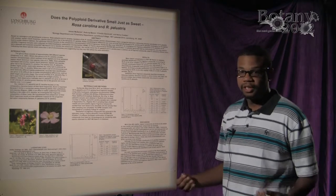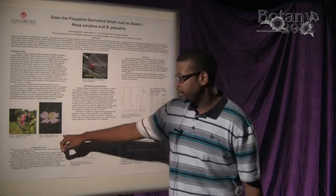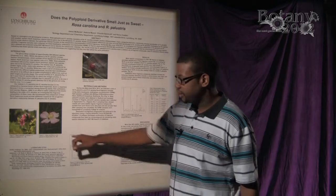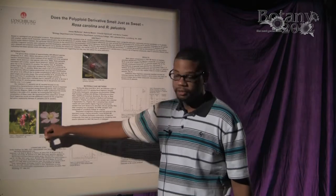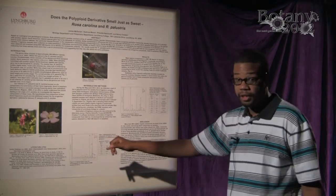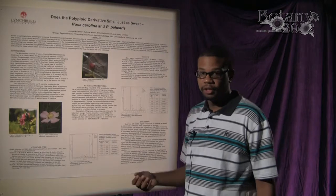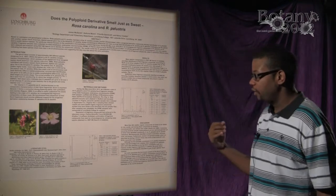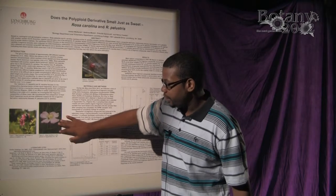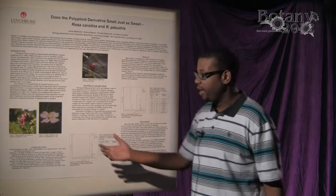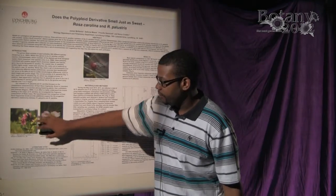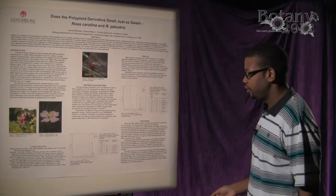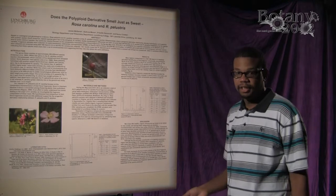What we were looking for was trying to shed light on the origin of Rosa Carolina, which, from previous publications, is actually a tetraploid that was hybridized from Rosa palustris — the diploid species — as well as another eastern North American diploid species. We were trying to understand what made Rosa Carolina become hybridized from Rosa palustris, and we set out to do that using fragrance signatures, SPME analysis, and gas chromatography.